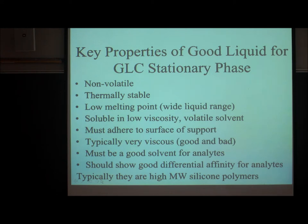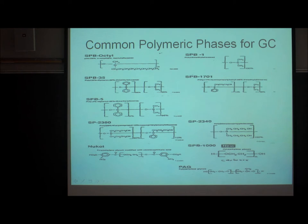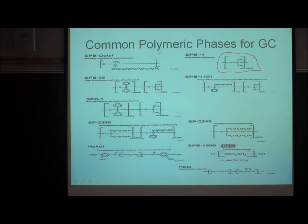Typically, GC stationary phases are high-molecular-weight silicone polymers. Looking at a catalog entry for SP-D2, the polymer is polydimethylsiloxane — the repeat unit is O-Si(CH₃)₂ — known as PDMS. No one says polydimethylsiloxane; you just say PDMS as fast as you can.